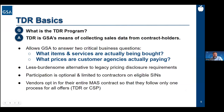First things first — what is the TDR program? Simply put, TDR is GSA's means of collecting line item sales data from contract holders like you. Think of it as the difference between a detailed receipt from a store versus a rolled-up monthly invoice. We want that really long receipt with all of the lines of data on it. Getting that data allows GSA to answer a couple of really critical business questions: what items or services are actually being bought on the multiple award schedule program, and what prices are customer agencies actually paying for those items and services?